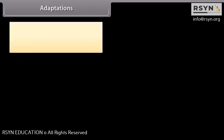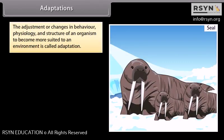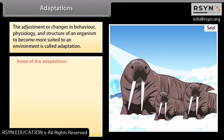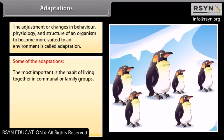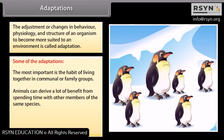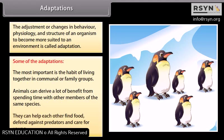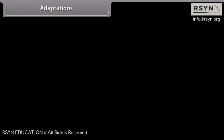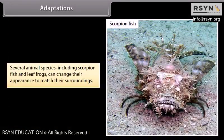The adjustment or changes in behavior, physiology, and structure of an organism to become more suited to an environment is called adaptation. One important adaptation is the habit of living together in communal or family groups. Animals can help each other find food, defend against predators, and care for young. Several animal species, including scorpionfish and leaf frogs, can change their appearance to match their surroundings.